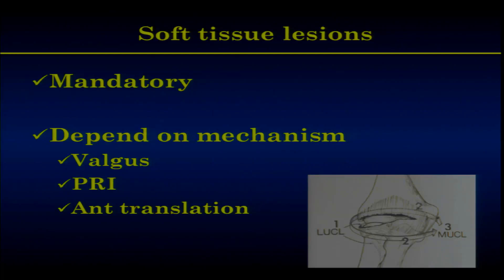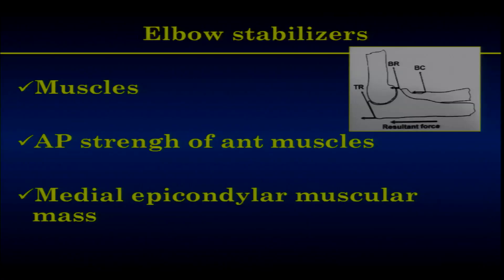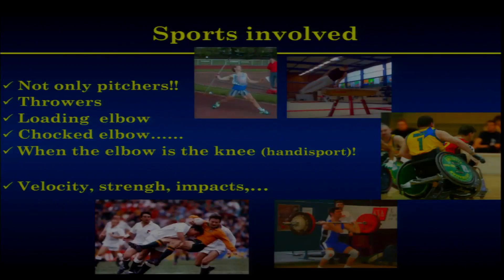When you have a dislocation, you mandatory have soft tissue lesion — it depends on the mechanism. You have posterior lateral rotatory instability, for sure. But by experience, there are patients who had a dislocation with only swelling, pain, and valgus-type instability, without any rotatory instability in supination. And in some cases there is anterior translation. The other stabilizers can participate but are not enough to stabilize the elbow once dislocation occurs.